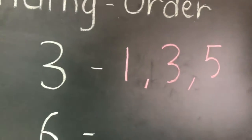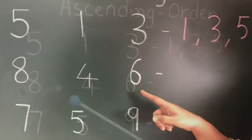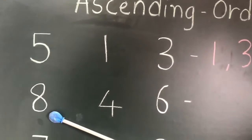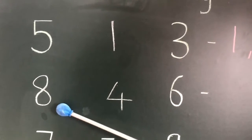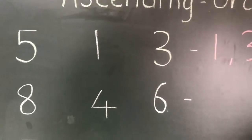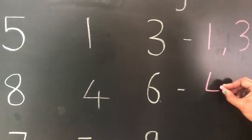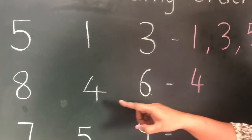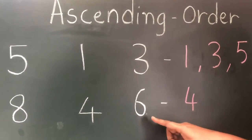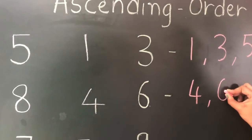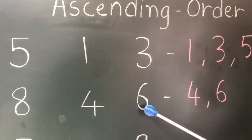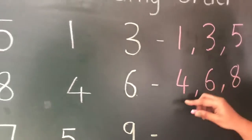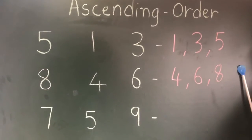Now children, can you see the next three numbers: eight, four, and six? Which number is the smallest? Yes, four is the smallest, so I'm going to write four first. After four, in increasing order, six will come. Then the next number will be eight. It is going from down to up.